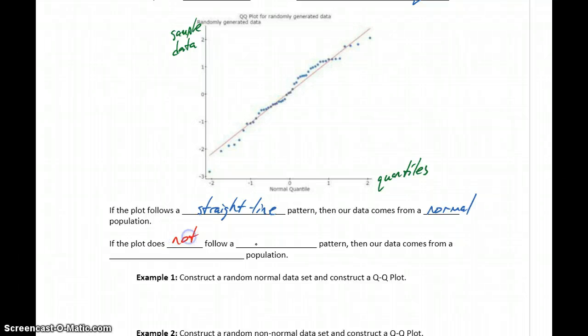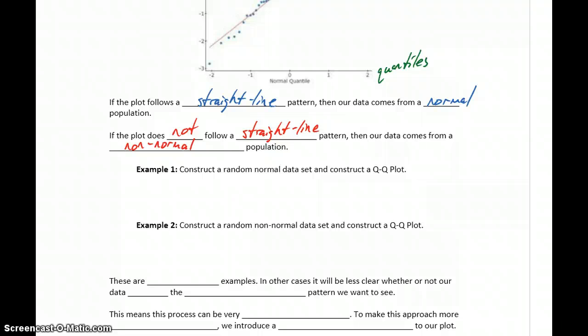If it's not a good fit for that straight line pattern, that means our sample data is not fitting with our expectations. It's not matching up with that straight line pattern that we should see. It means our data comes from a non-normal population. So we don't know specifically what type of population, what the shape is. We just know it's something that doesn't meet the requirements of the standards for a normal distribution.